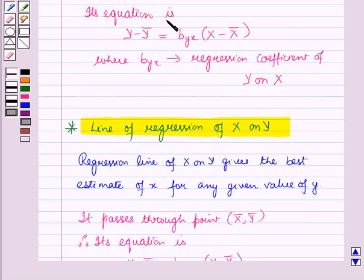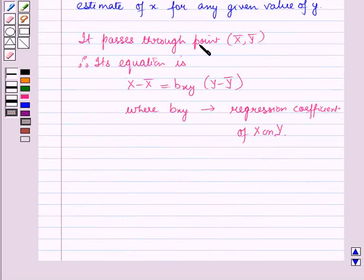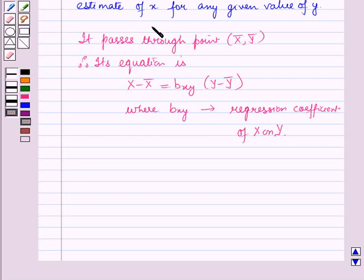The regression line of y on x passes through the point (x̄, ȳ), and so does the regression line of x on y. Therefore, both regression equations pass through the point (x̄, ȳ), which is the point of intersection of the two lines of regression.